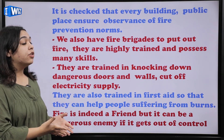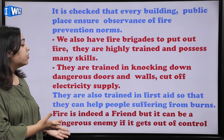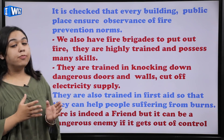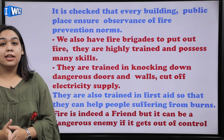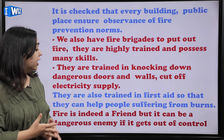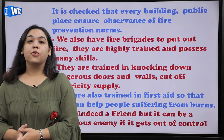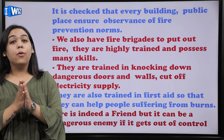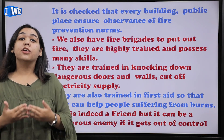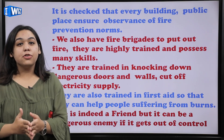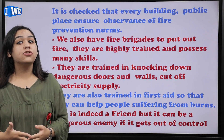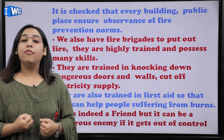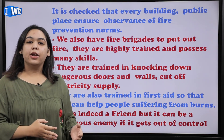The firefighters are also trained in first aid so that they can help people suffering from burns. Therefore, fire is indeed a friend, but it can be a dangerous enemy if it gets out of control. From this chapter we learn that fire is a very nice friend only when we control it — it is under our control. But when it gets out of control it can be a very dangerous enemy, so we should take all precautions to make fire our friend and keep it within controlling limits.